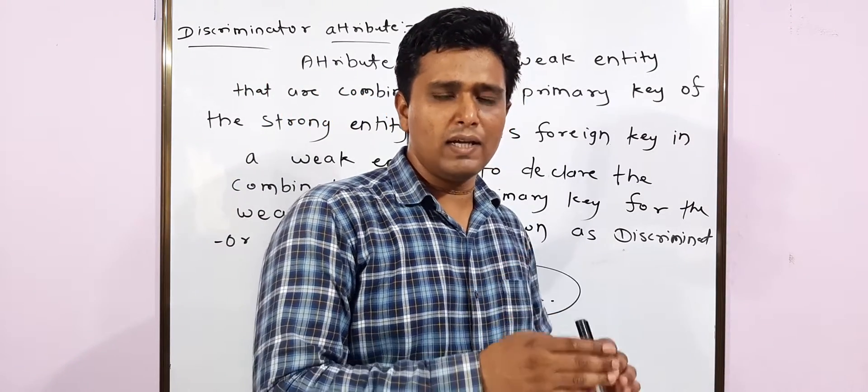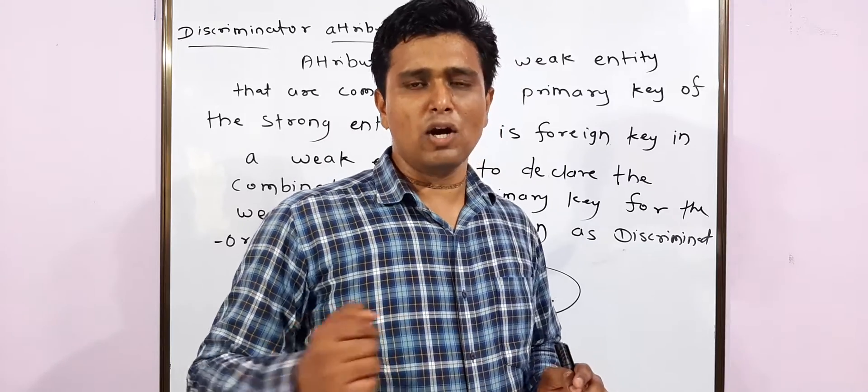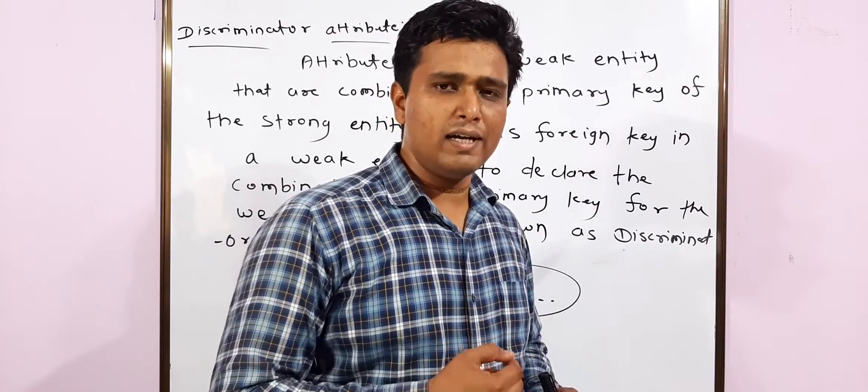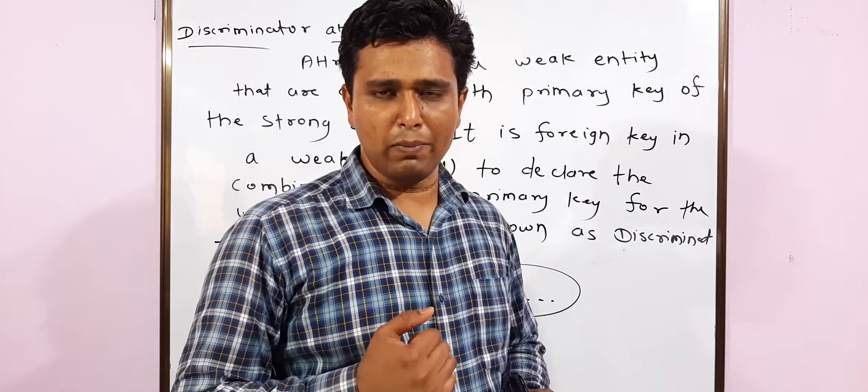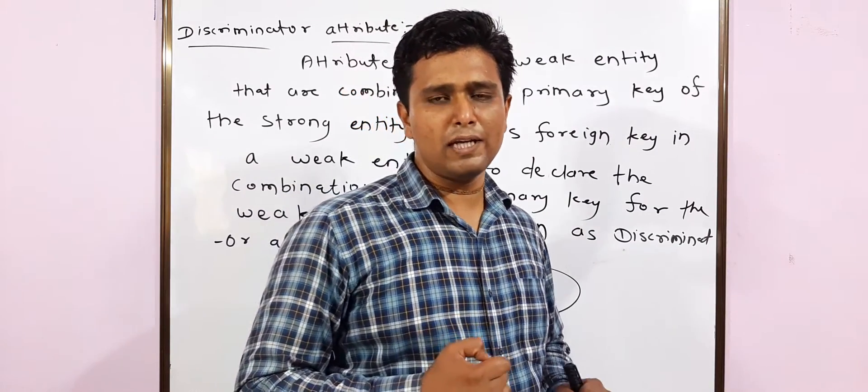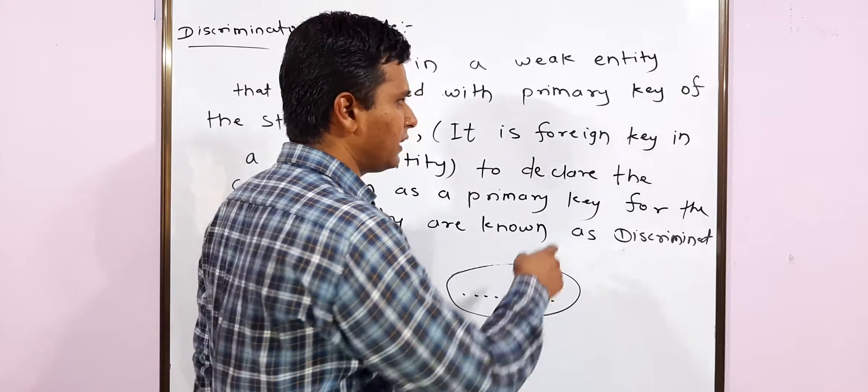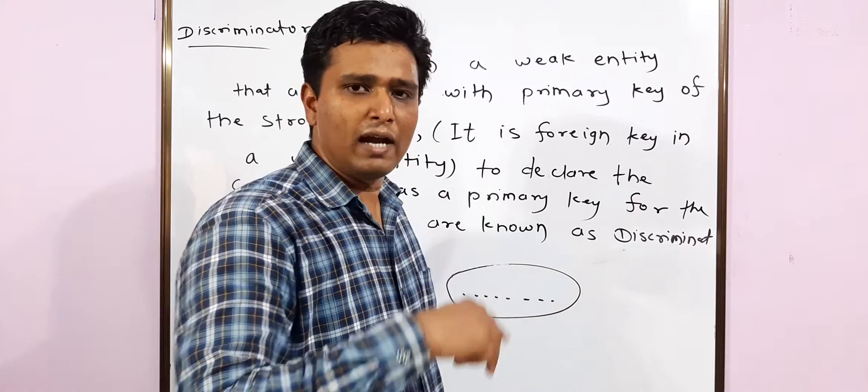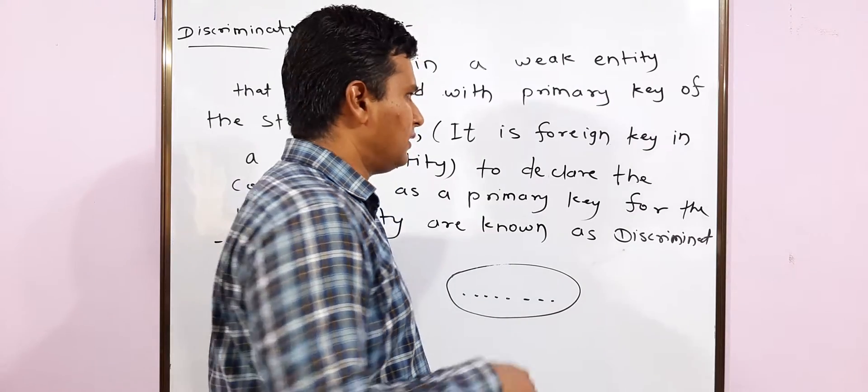We wish to make the weak entity as a strong entity, or we would like to give the weak entity a primary key. So how to give a primary key? What we will do is we will take the primary key of another table which is related to that previous table.